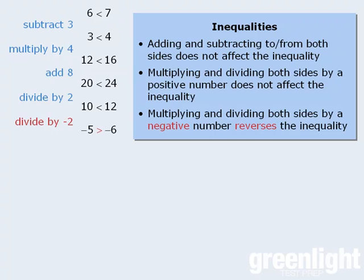We can now use these results to help us solve inequalities. Essentially, if we perform the same operation on both sides of the inequality, the inequality will remain intact. However, if we multiply or divide both sides by a negative number, we must reverse the direction of the inequality.